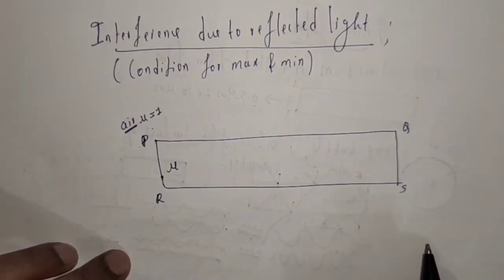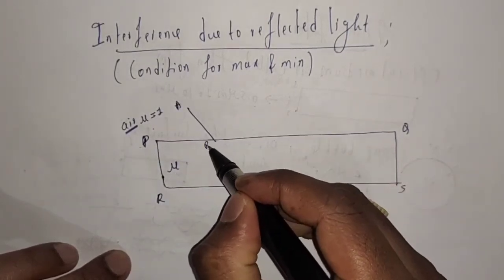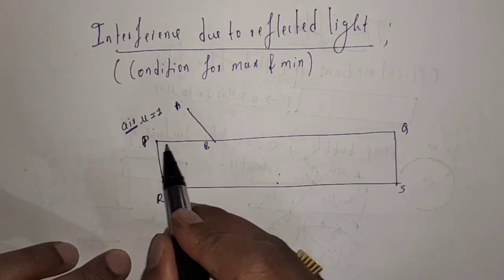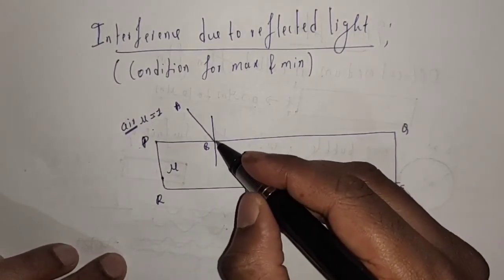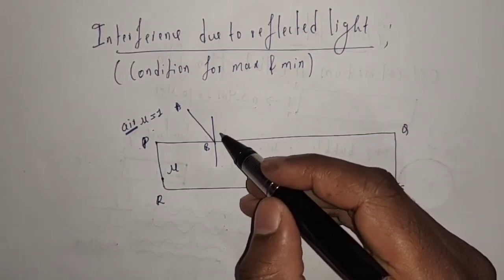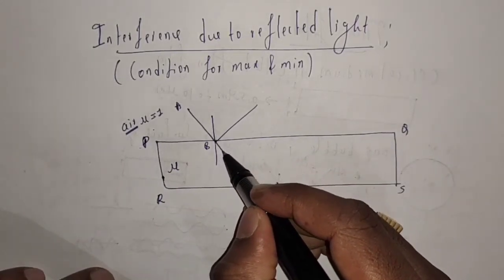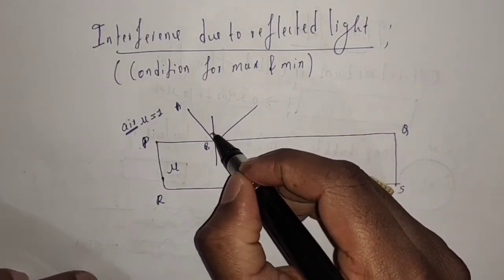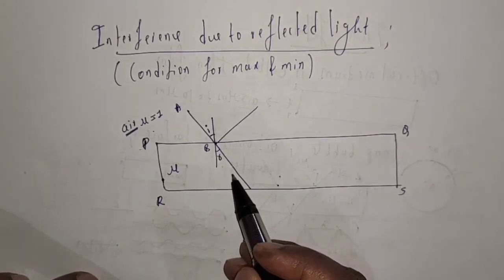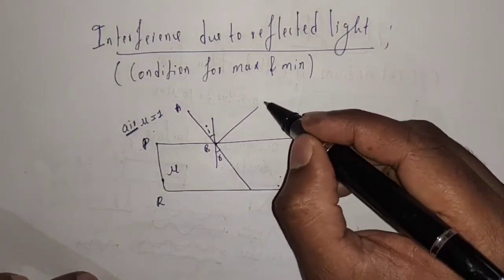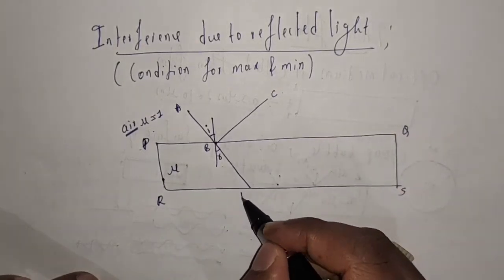Now let us suppose a light ray AB is incident on the top face of the thin film. I am going to draw a normal here. When it is incident on the top face, some part of the light gets reflected and some part gets refracted. Let us denote the angle of incidence by I and the angle of refraction by R.